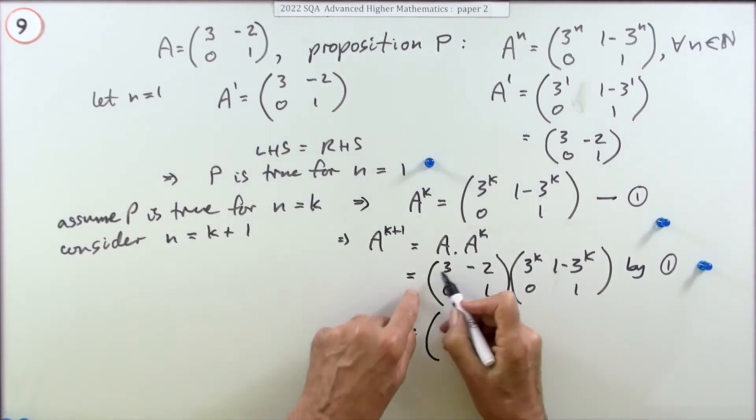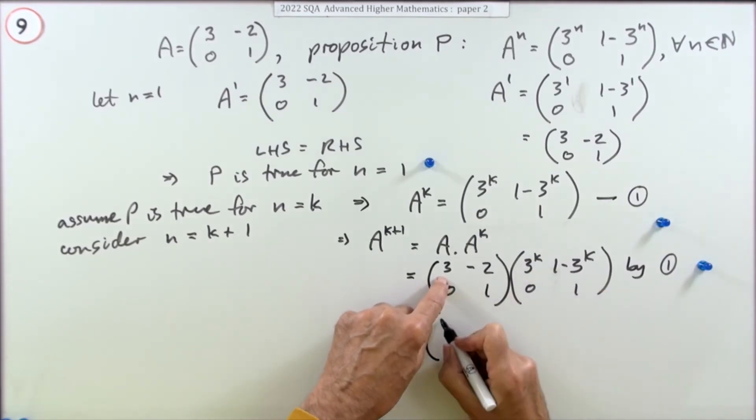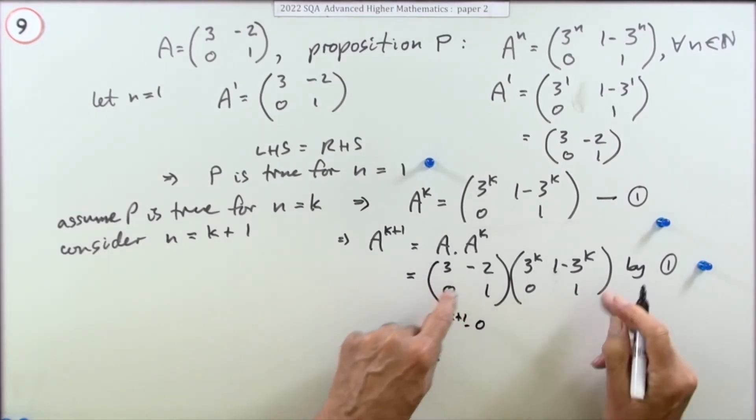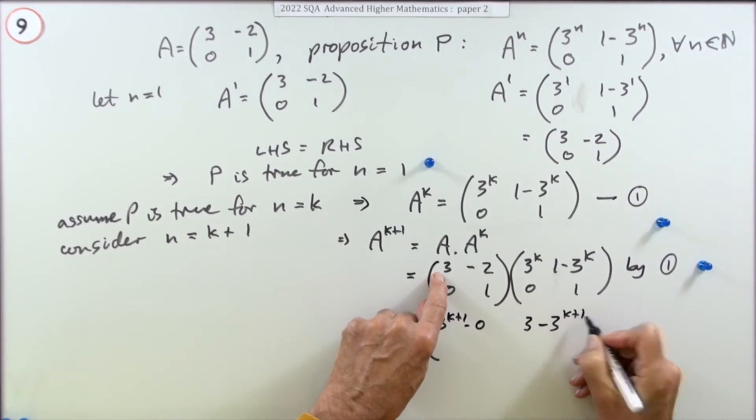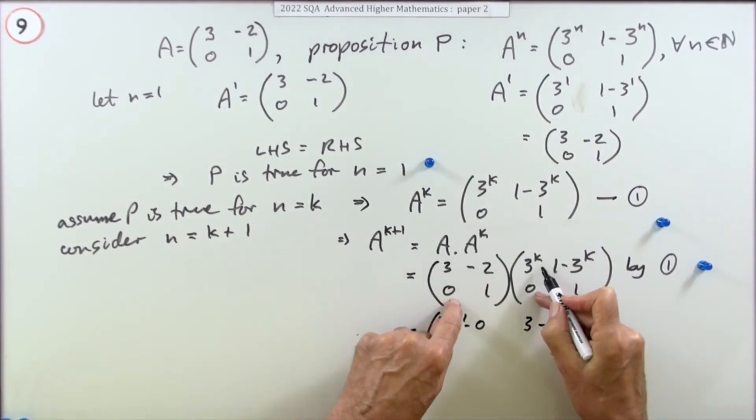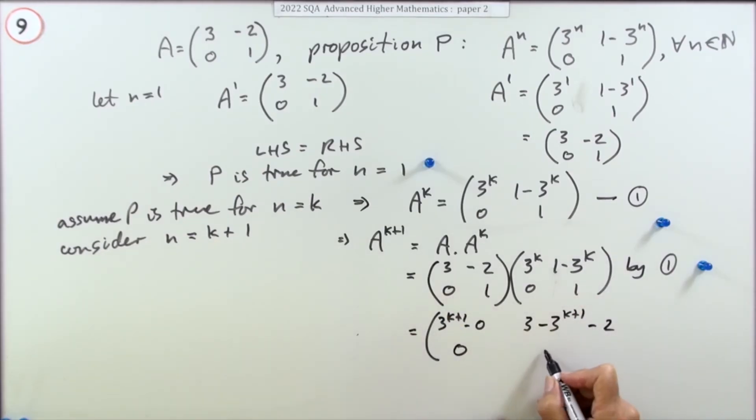Let's multiply this out. It's row times column. So it'll be 3 times 3^k, that'll be 3^(k+1) minus 0. This one, that's going to be 3(1-3^k) plus (-2)(1), which is 3 - 3^(k+1) - 2. That's going to be 0 and 0 is just 0. That's going to be 0 and 1 which is just 1.